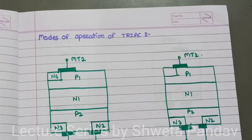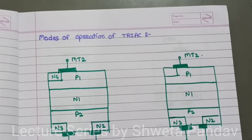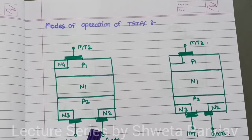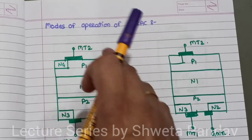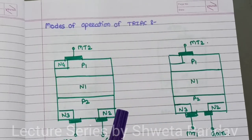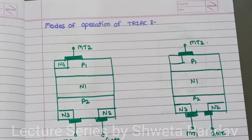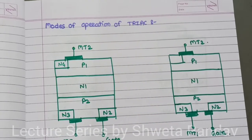Let us see the modes of operation of the triac. Here the structure of the triac is drawn. This is the MT1 terminal, this is the MT2 terminal, and this is the gate terminal. Now in Mode 1, what happens?